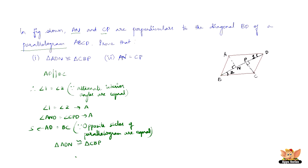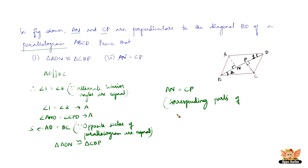Therefore, since the two triangles are congruent to each other, any part of one triangle equals the corresponding part of the other. So we can say that AN equals CP, because corresponding parts of congruent triangles are equal.